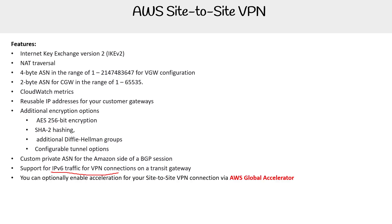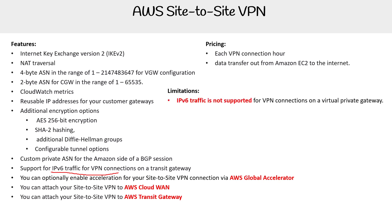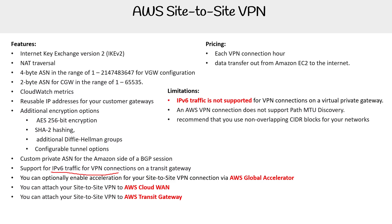You can optionally enable acceleration for your site-to-site VPN connection via the global accelerator. You can attach a site-to-site VPN to AWS Cloud WAN or to AWS Transit Gateway. For pricing, you pay for each VPN connection per hour, and data transfer out from Amazon EC2 to the internet is an additional cost. Limitations include no IPv6 support for virtual private gateway — use transit gateway for IPv6. VPN connections also do not support path MTU discovery, and it's recommended to use non-overlapping CIDR blocks. For those not deep into networking, the main things to remember are the IPv4 vs. IPv6 difference and the pricing.